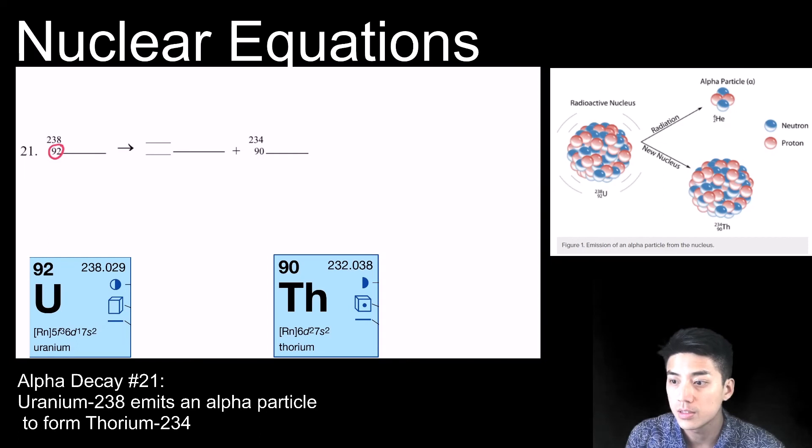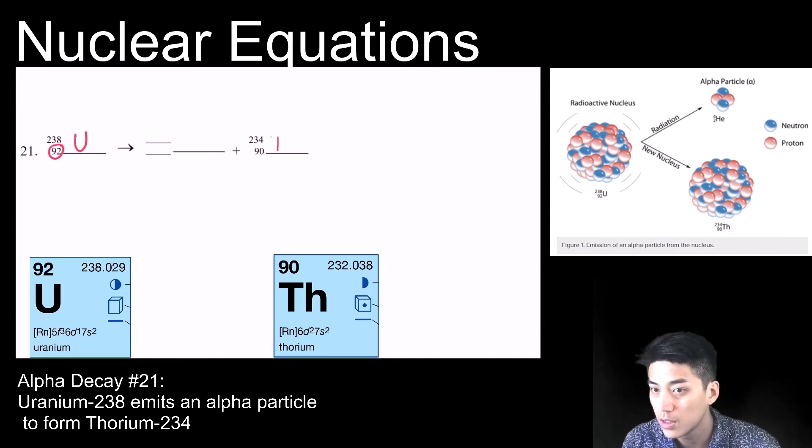Problem number 21. Let's fill in the blanks here. So atomic number 92 is uranium if you look on the periodic table. And on the other end, atomic number 90 is thorium. So I'm going to fill in their symbols, U and Th, respectively.